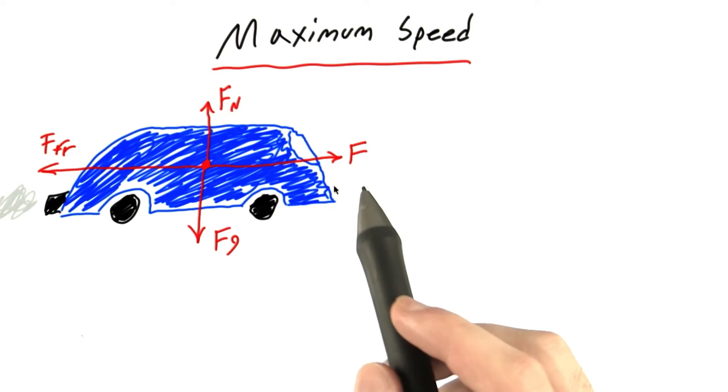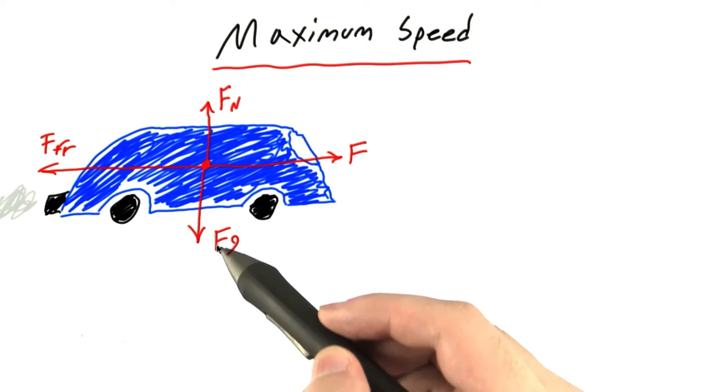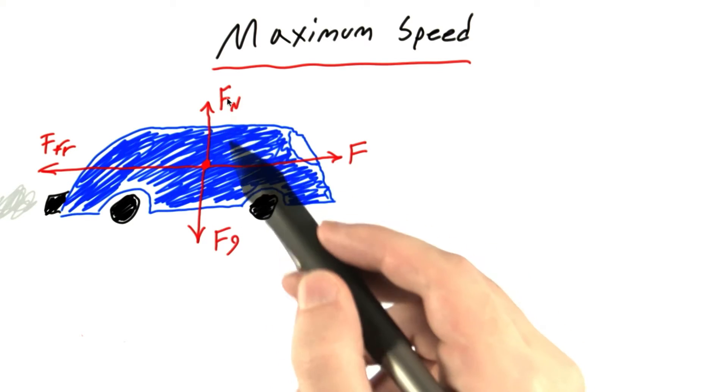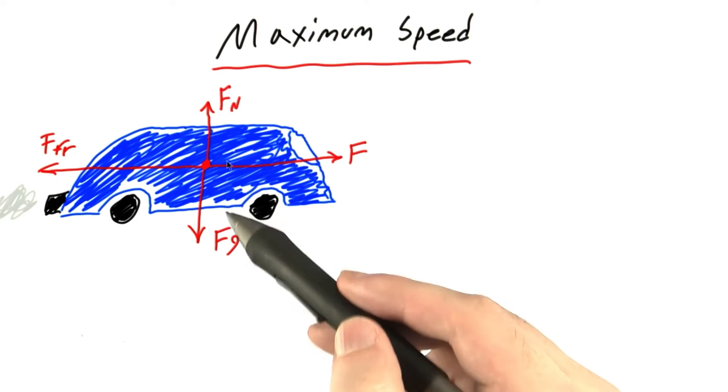So the first thing I did to solve this problem was to draw a force diagram. We know the force of gravity is pulling down on the car like we'd expect and there's some normal force pointing upwards. And since the car isn't accelerating vertically, we know these two forces must balance each other out perfectly.